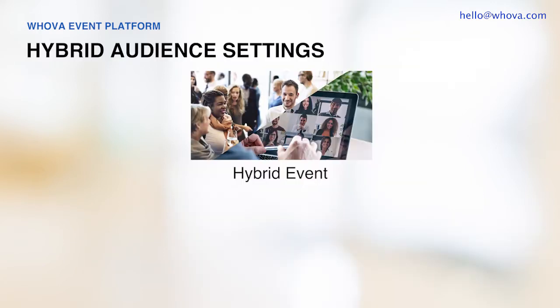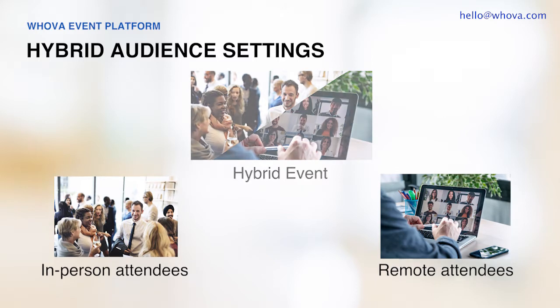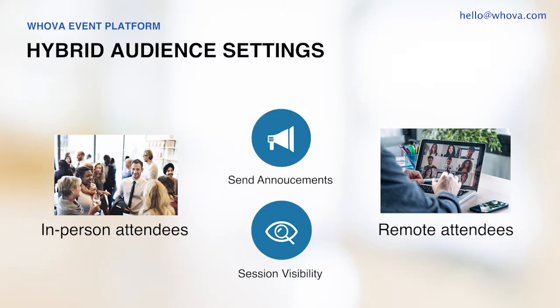If your event is hybrid, it's important to differentiate your hybrid audience as their event experience will differ from each other. Whova's hybrid audience settings allows you to create separate channels for both the in-person and remote attendees to easily manage them. For example, if you made changes to your online stream links, you can choose to send an announcement to notify only your remote attendees. Or if you have a post-event banquet only for your in-person attendees, you can make the session visible only to them.